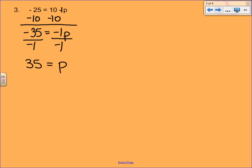But this is a little bit backwards. So we're going to use something called the symmetric property. And we're just going to flip around the equation. So you'd actually write your answer as p equals 35.